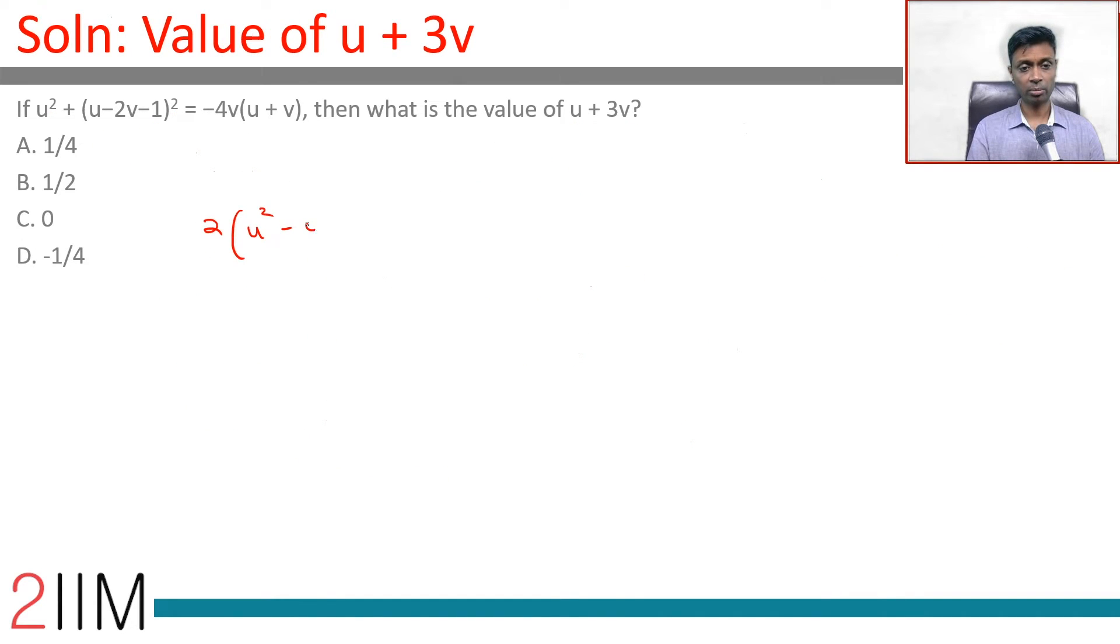2 times u square minus u plus 2 times 4v square plus 2v equals minus 1. u square minus u is part of u minus 1 by 2 the whole square, u square minus half into 2 into u which becomes u. This is u square minus u plus 1 by 4. There are plus 1 by 4 sitting inside. Then this becomes a nice square.